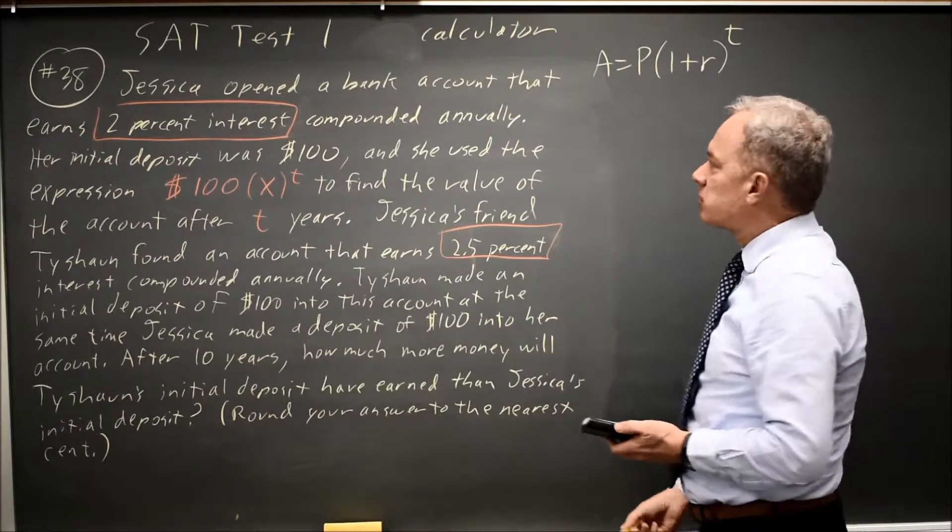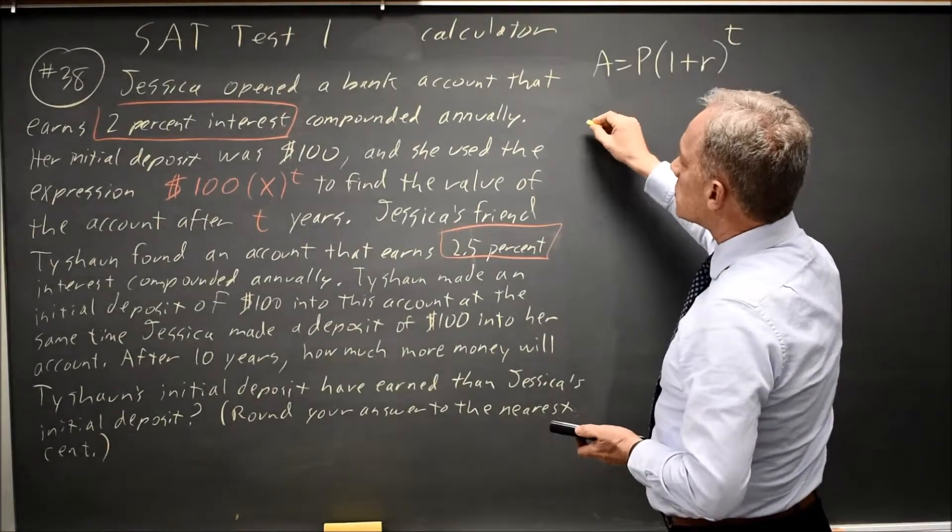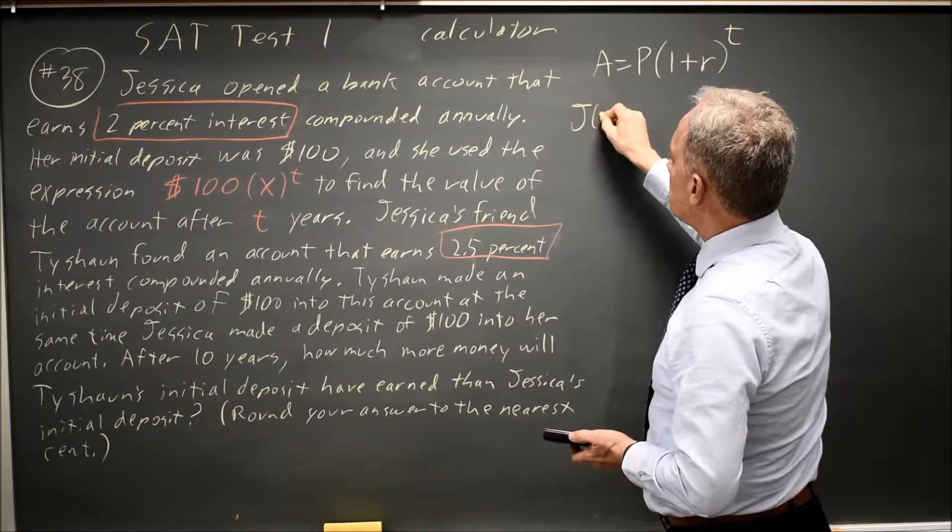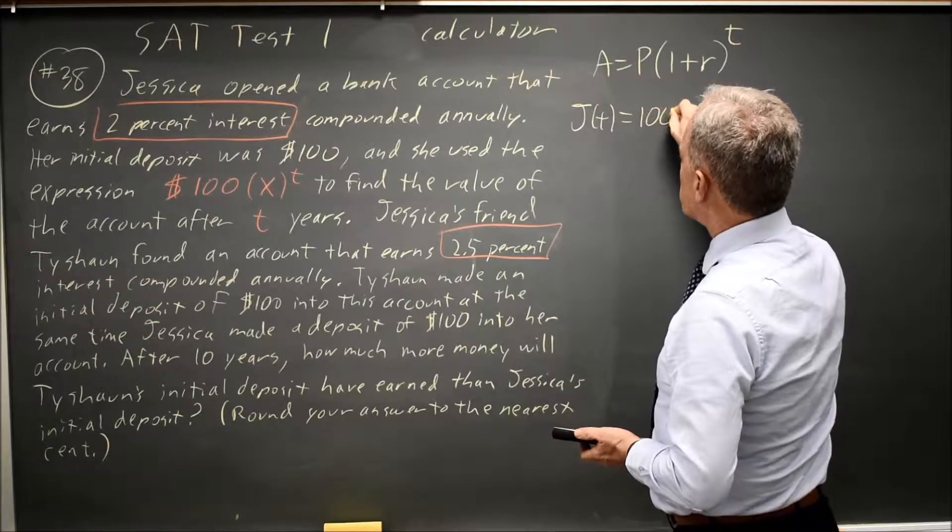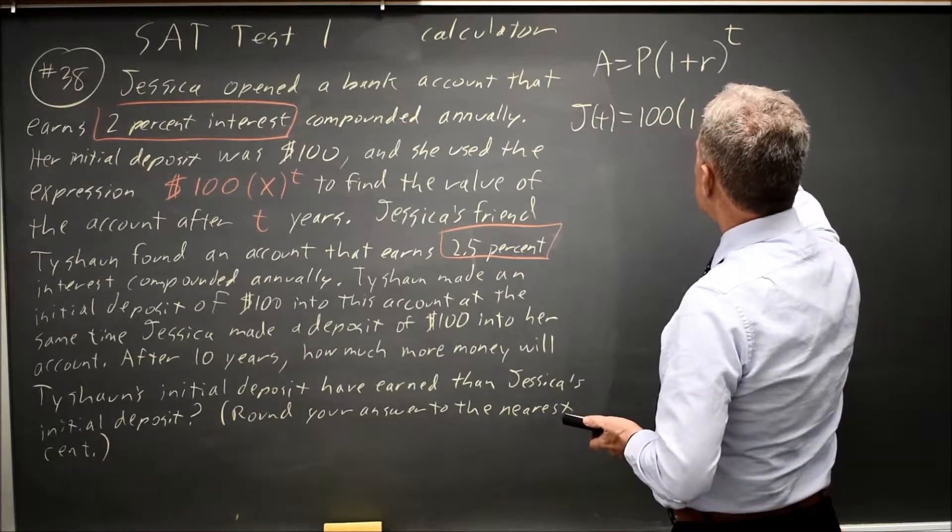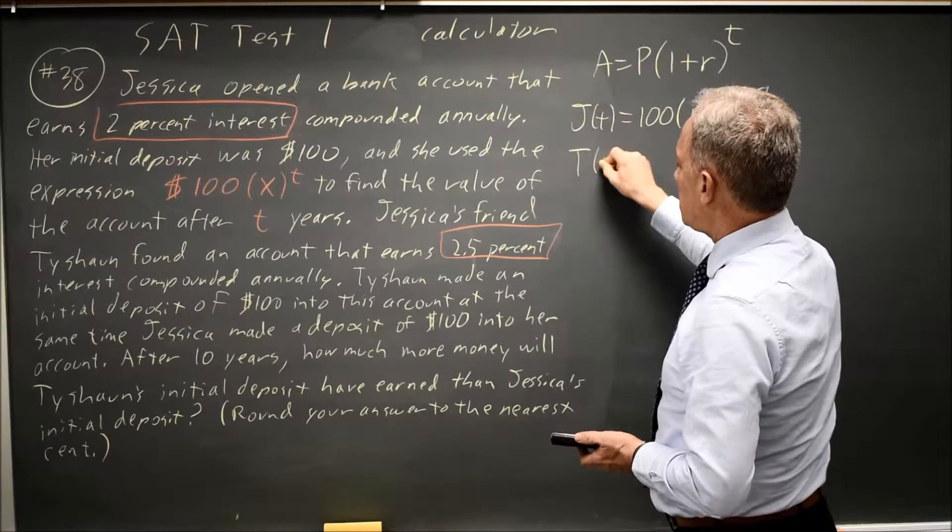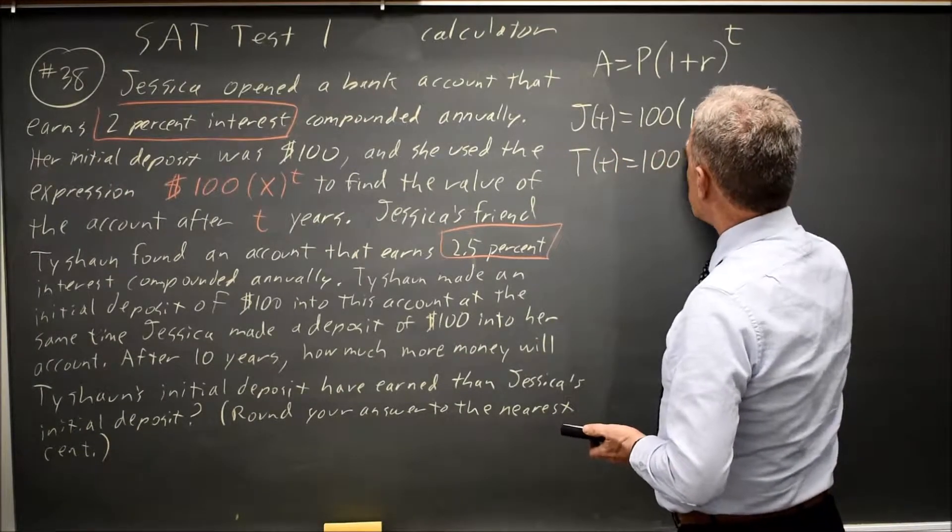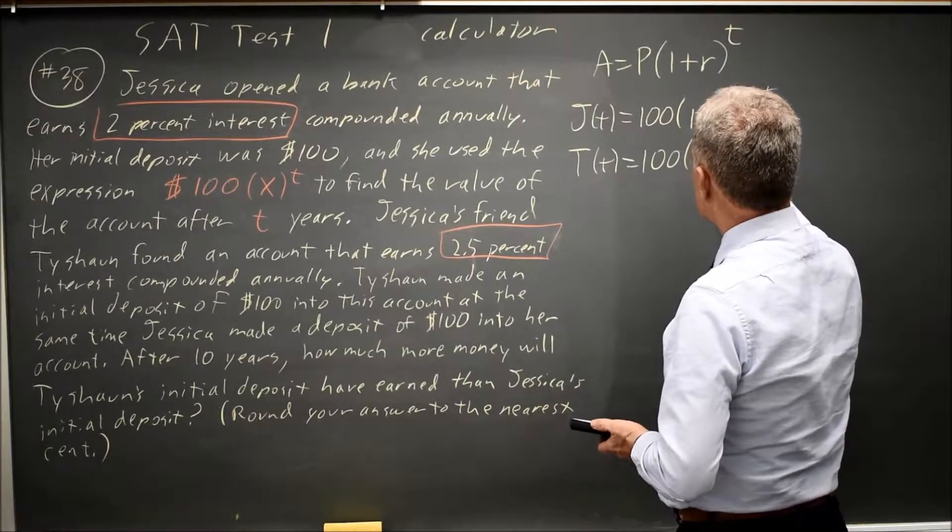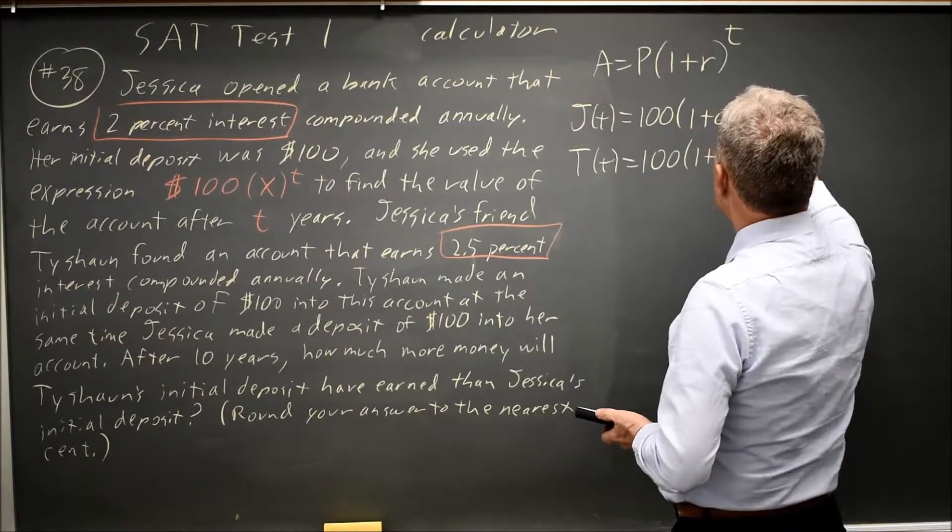Where T is in years if your interest rate is an annual rate. So for Jessica, J(T) = 100(1 + 0.02)^T. And for Tyshawn, T(T) = 100(1 + 0.025)^T.